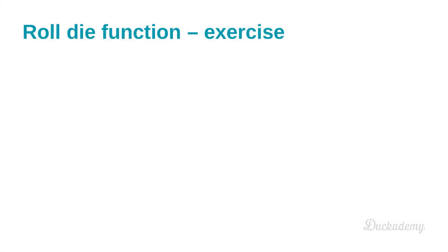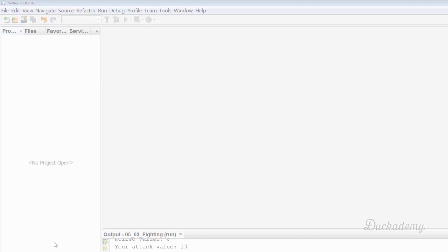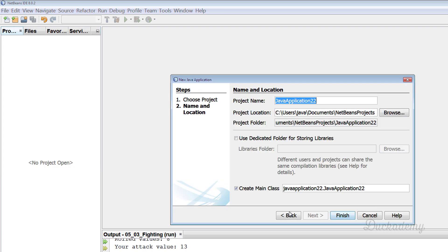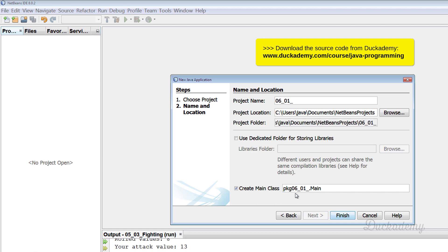So let's see the first exercise. Let's write our first function for rolling a die. For solving this exercise, we create a new project. Java, Java application project with the name zero six zero one roll the dice.